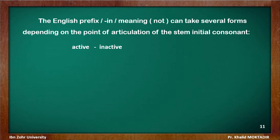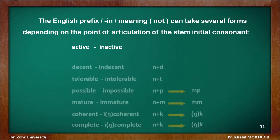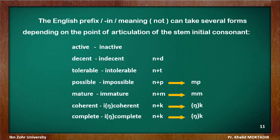Look at these words: active — inactive; decent — indecent; tolerable — intolerable. The nasal is alveolar before alveolar consonants, bilabial before bilabial consonants as in 'impossible' and 'immature,' and velar before velar consonants as in 'incoherent' and 'incomplete.'